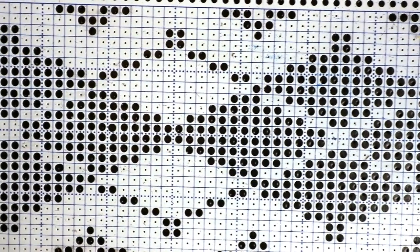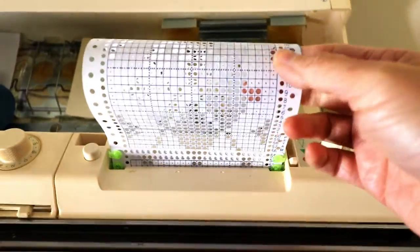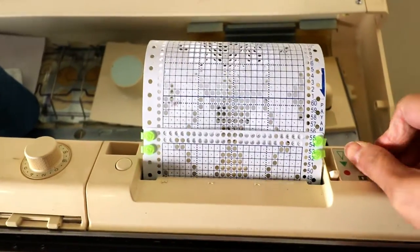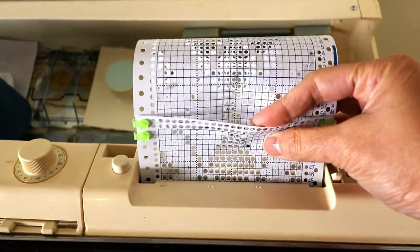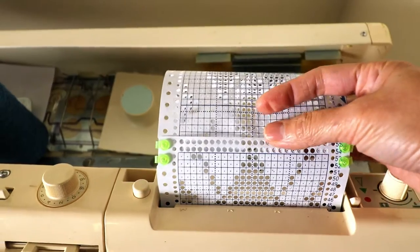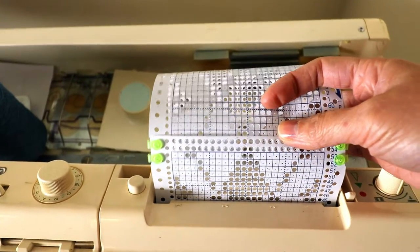Now we are going to knit a sample. First insert the punch card by turning the dial and match both ends so it becomes a tube and place the clips on both sides so the pattern is continuous.